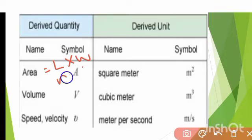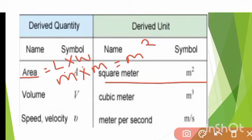Length is measured in terms of meter, width is also measured in terms of meter. Meter into meter equals meter square. Therefore, the derived unit of area is meter square.